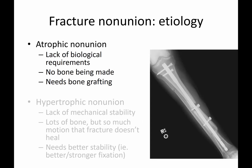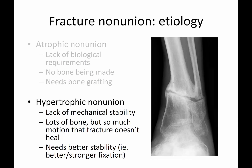To break things down simply, non-unions can occur for two reasons. One is atrophic — there's a lack of biologic requirements: lack of cells, lack of blood supply, lack of growth factors, and there's really no bone being made. Here you can see this gap; perhaps the blood supply is poor, possibly stripped away by cables placed around the tibia. In these cases, you may need to do bone grafting and stimulate the biologic environment by bringing in growth factors and cells.